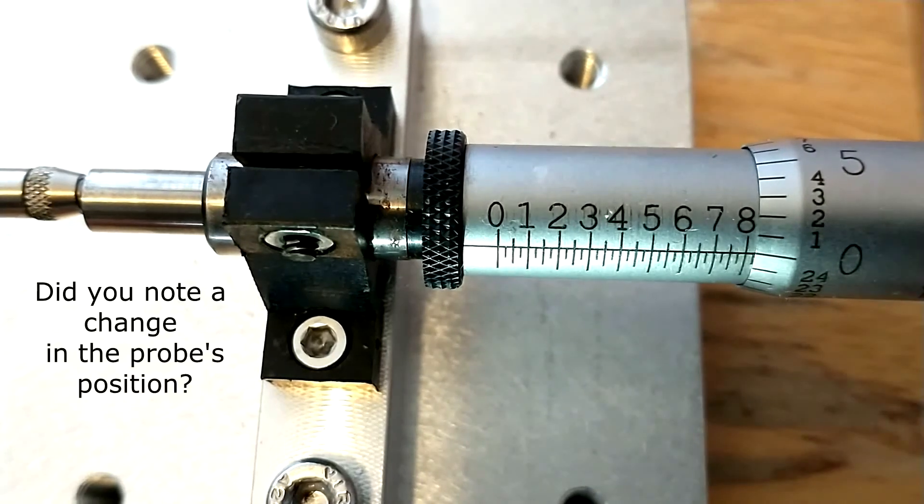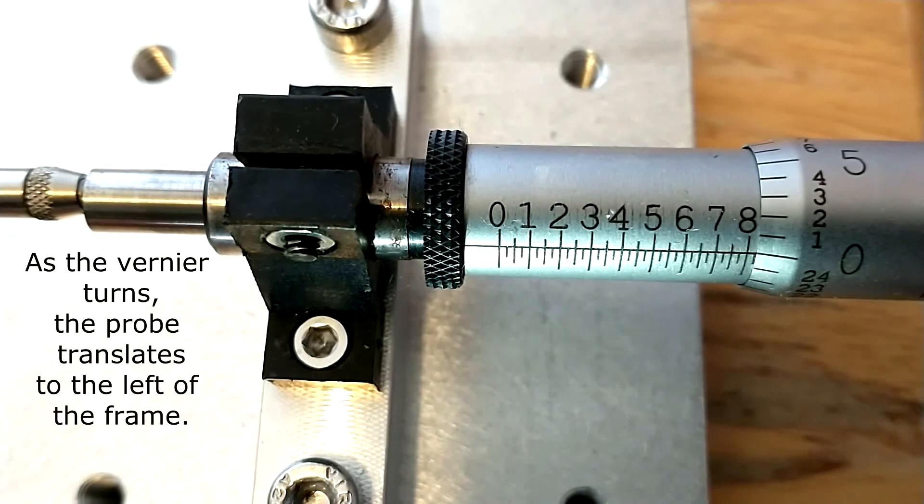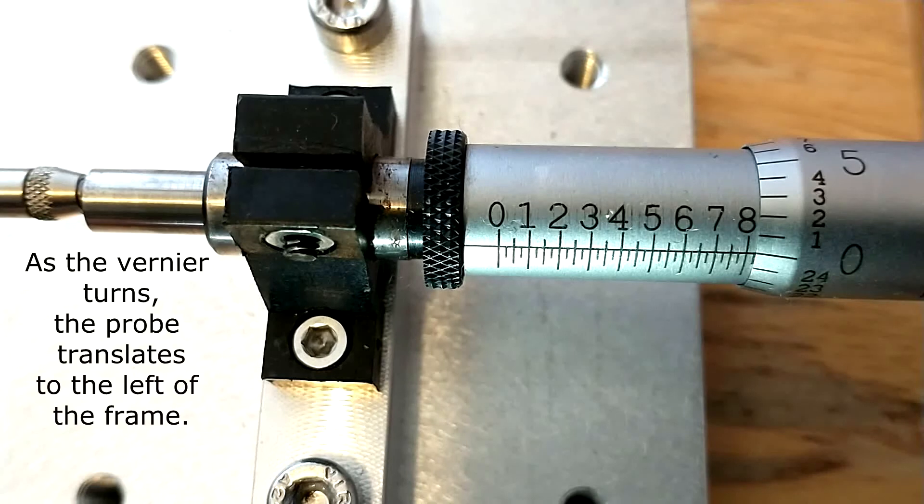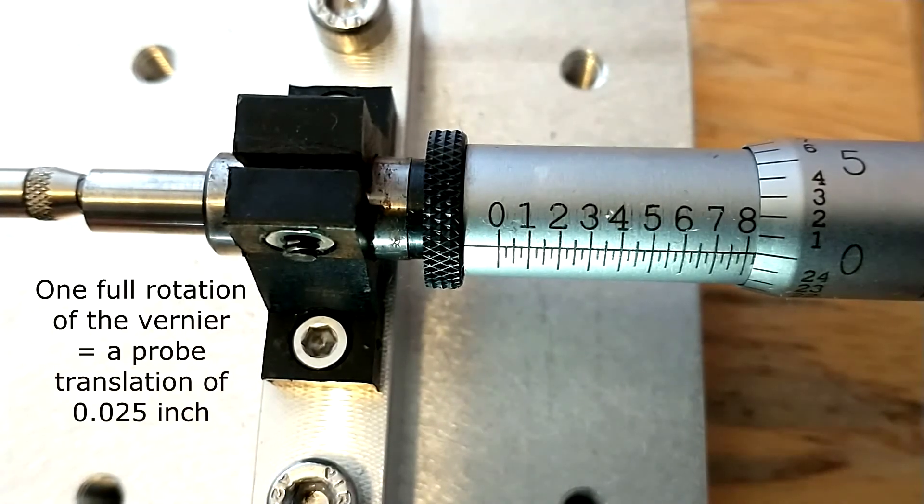And so each full rotation of the vernier represents an advance of 0.025 inch. I can continue that down the micrometer length. As I do so, our probe will advance through the LVDT.